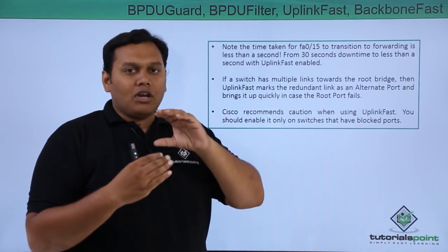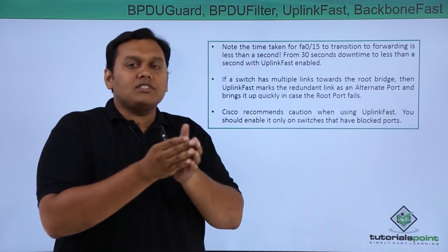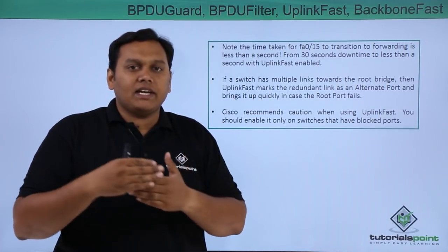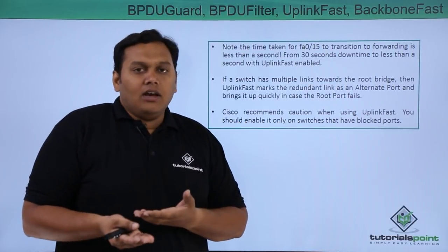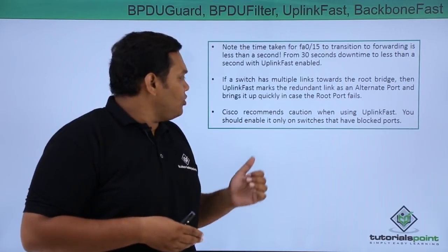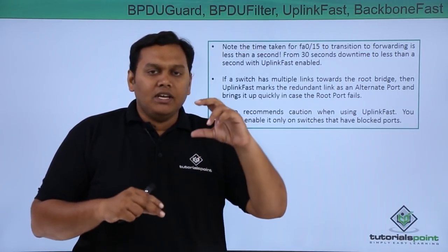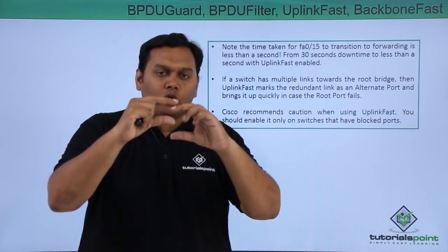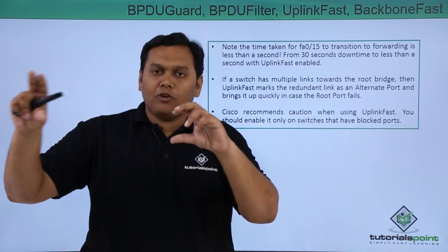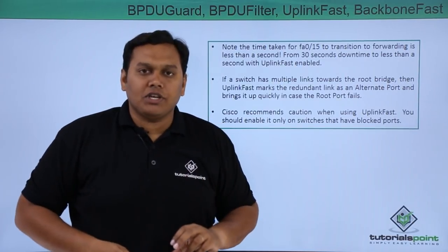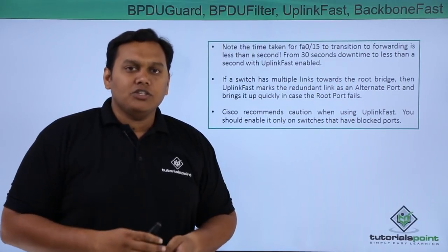With uplink fast enabled, the transition time reduces from 30 seconds to about 1 second, because uplink fast searches for alternative ports that are directly connected to that switch. Cisco recommends caution when using uplink fast — you should enable it only on switches that have blocked ports, as uplink fast uses those blocked ports as alternative ports.